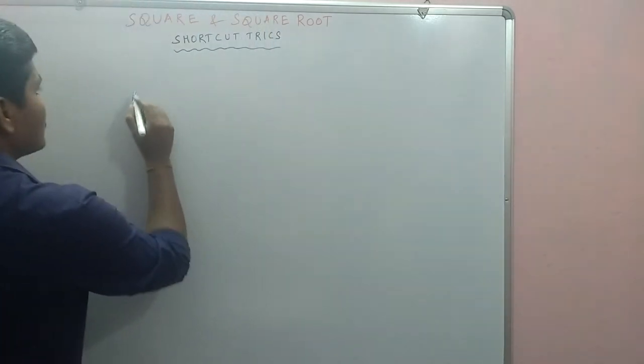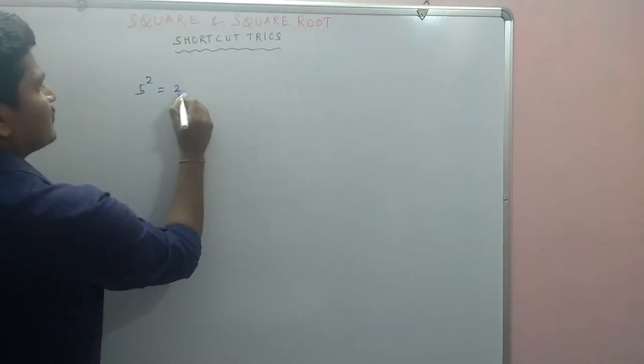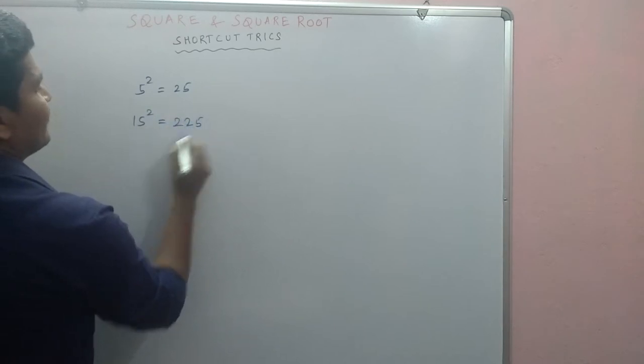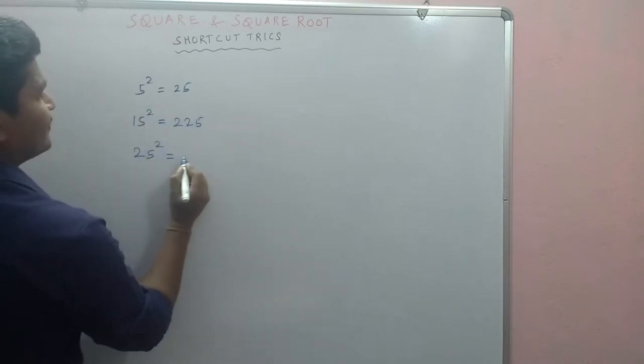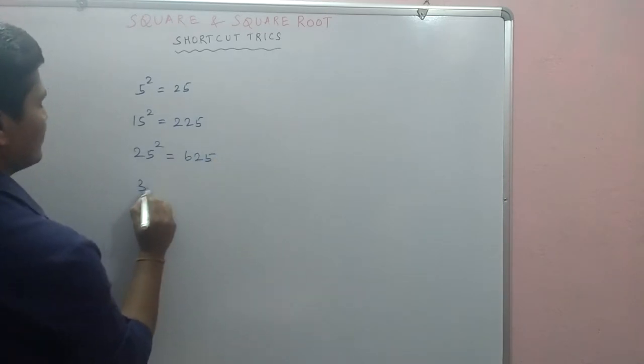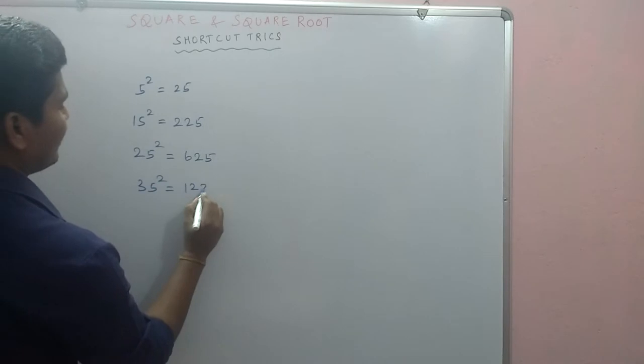5 square is 25. 15 square is 225. 25 square is 625. 35 square is 1225.